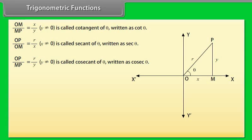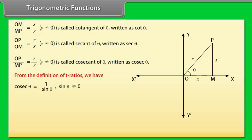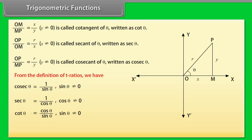From the definitions of trigonometric ratios: cosec θ = 1/sin θ (sin θ ≠ 0); sec θ = 1/cos θ (cos θ ≠ 0); cot θ = cos θ/sin θ (sin θ ≠ 0); tan θ = sin θ/cos θ (cos θ ≠ 0).